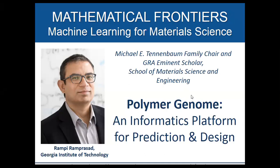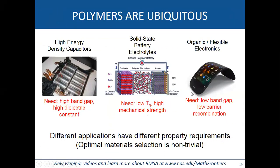Let me show a few examples of why polymers are important. At the beginning of this session, Dr. Green mentioned that we evolved from the Stone Age to the Bronze Age to the Iron Age, and it's hard to define what the present age is. Some people say it's the silicon age; some say it's the polymer age because we are surrounded by polymers.